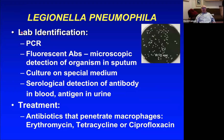Lab identification now uses PCR, fluorescent antibodies, culture on BCYE agar, and serology. Treatment: do not use penicillin, because it does not penetrate macrophages well. Erythromycin, zithromax, tetracycline, and ciprofloxacin all penetrate macrophages nicely and can be used to treat Legionnaire's disease.